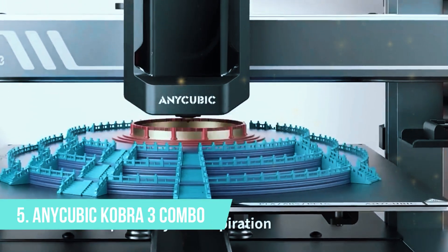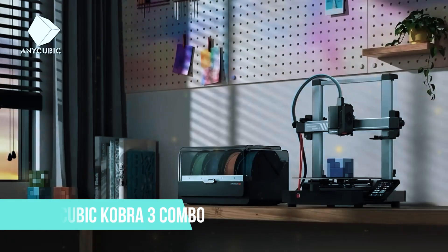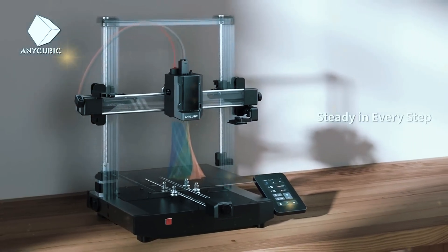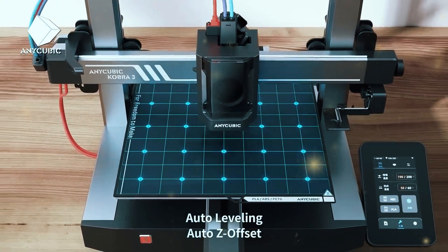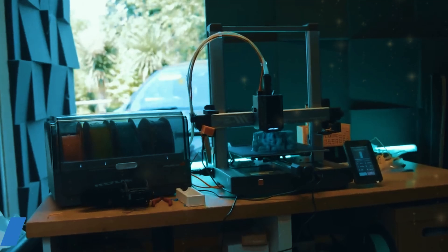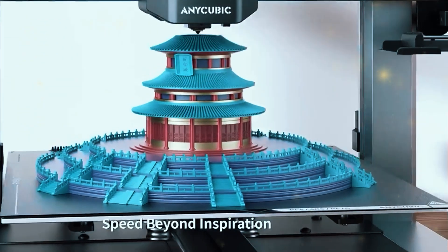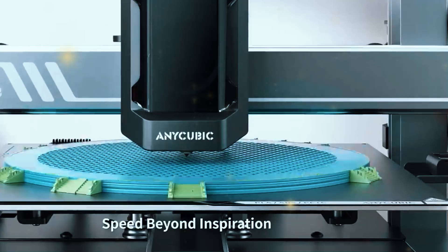Number 5: Anycubic Cobra 3 Combo. Next on our list is the Anycubic Cobra 3 Combo, a versatile machine that excels at both speed and color options. The Cobra 3 Combo can print at speeds up to 600 mm per second, which means it's capable of handling complex projects faster than many other printers out there.